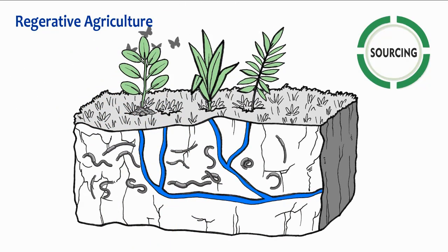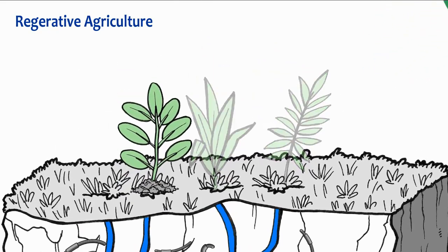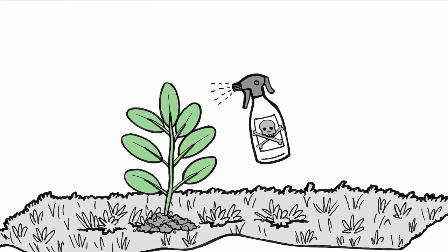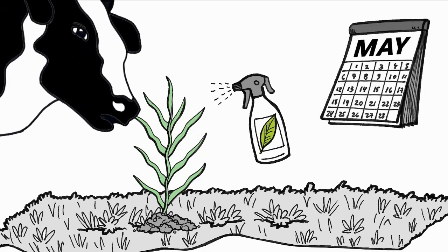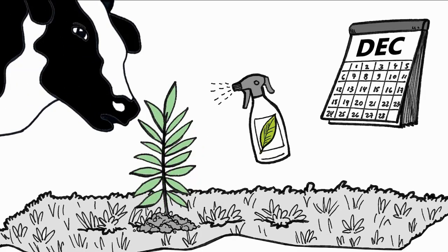sequester carbon, protect watersheds, and facilitate biodiversity. They include shifting from synthetic to organic fertilizers, using greater crop variation, and employing rotational crop and grazing.